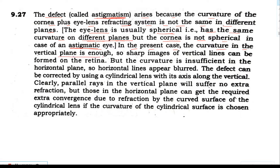In the present case, the curvature in the vertical plane is sufficient, so sharp images of vertical lines can be formed on the retina. However, the curvature is insufficient in the horizontal plane, so the horizontal lines appear blurred.